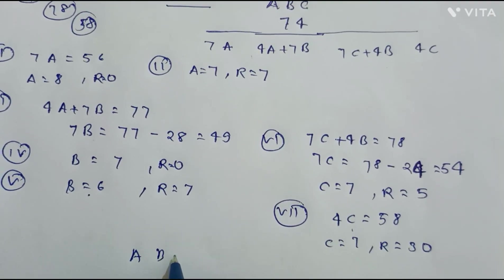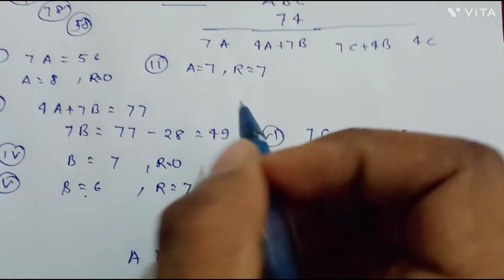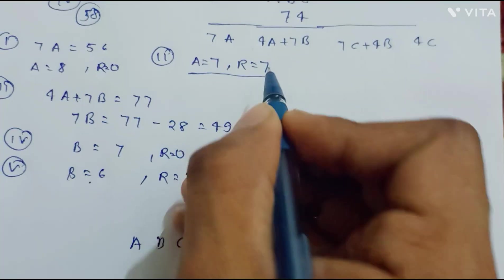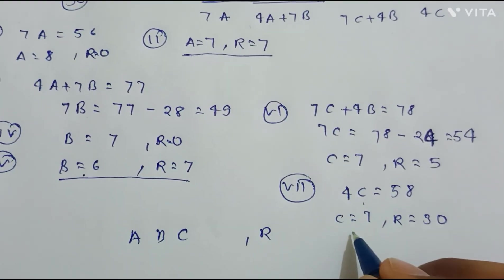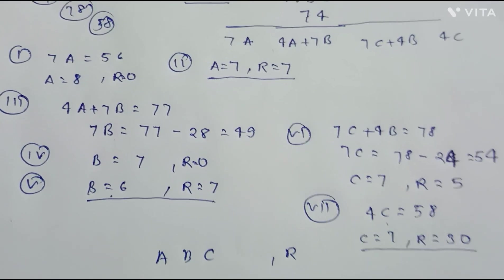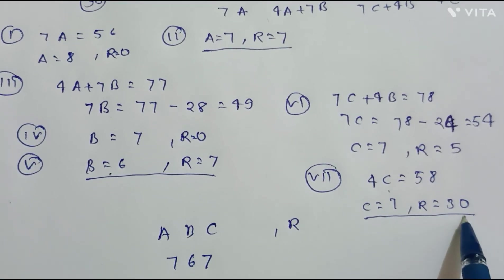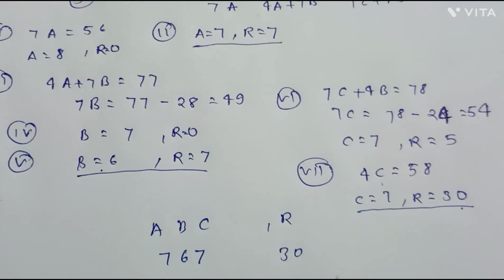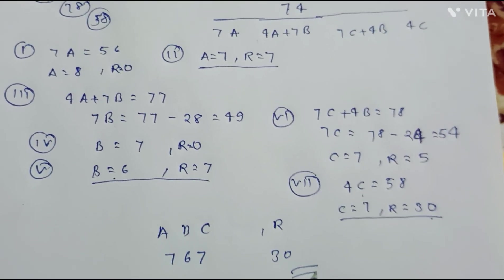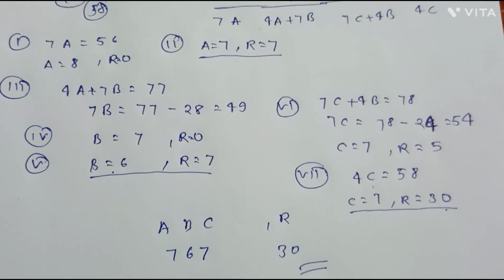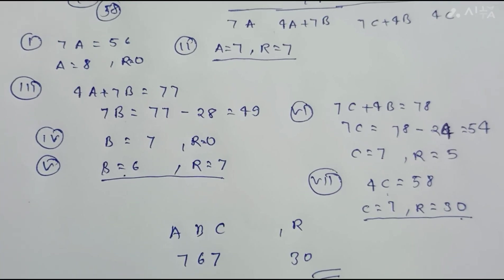So in the final answer, we have a equals 7, b equals 6, and c equals 7, giving us the quotient 767. The remainder from the last step is 30. In this way we solve questions related to division by the Urdhva-Tiryak Sutra. If you have any doubts about this question, please mention them in the comment section and watch the video two or three times to understand the concept better. Thank you.